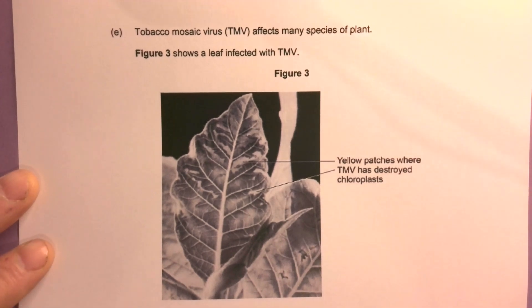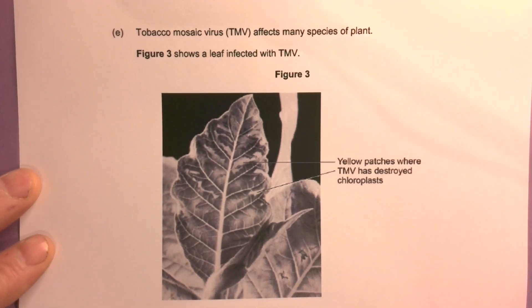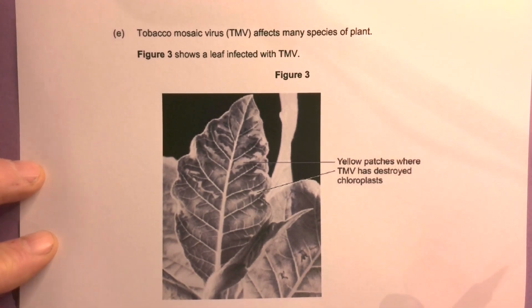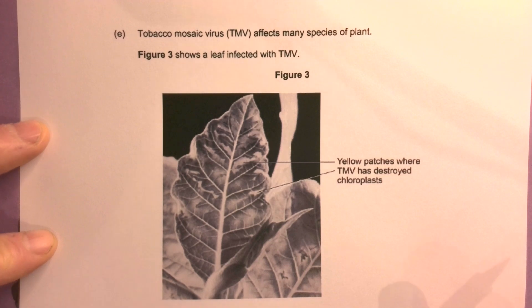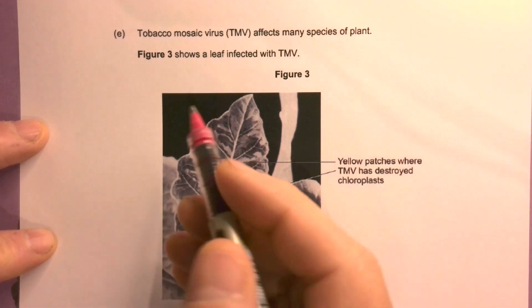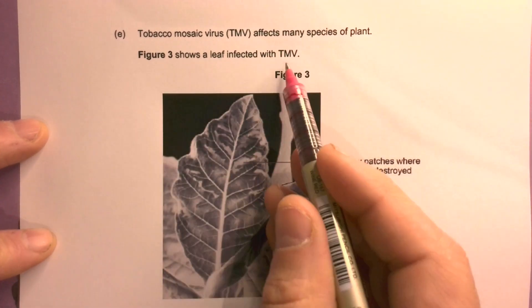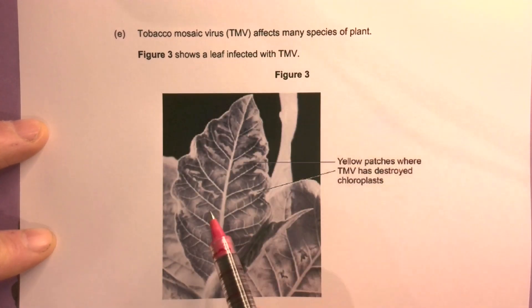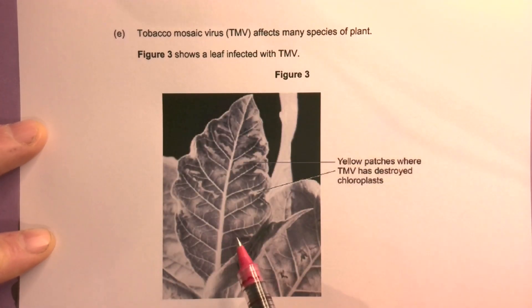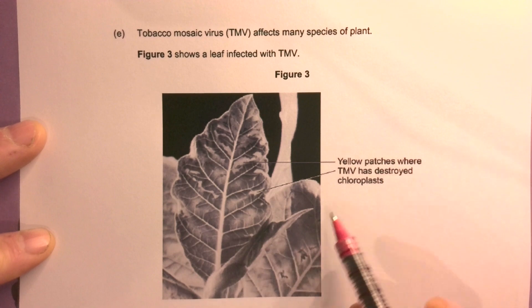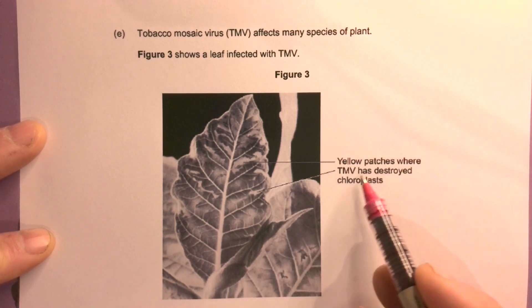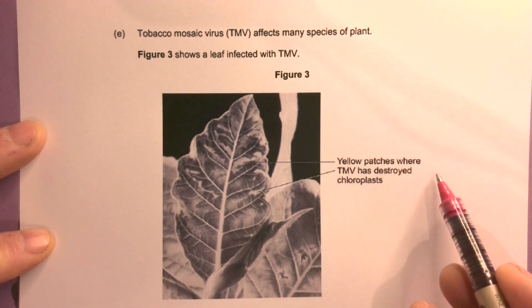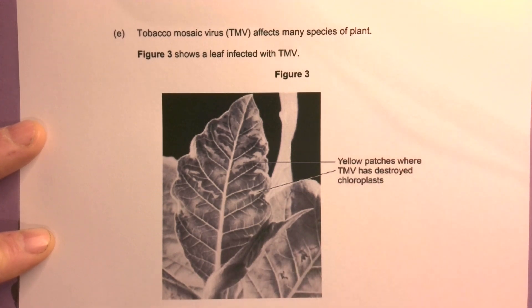Part E. Tobacco mosaic virus affects many species of plants. Figure 3 shows a leaf infected with TMV. So we've got a leaf here with yellow patches where TMV has destroyed chloroplasts.